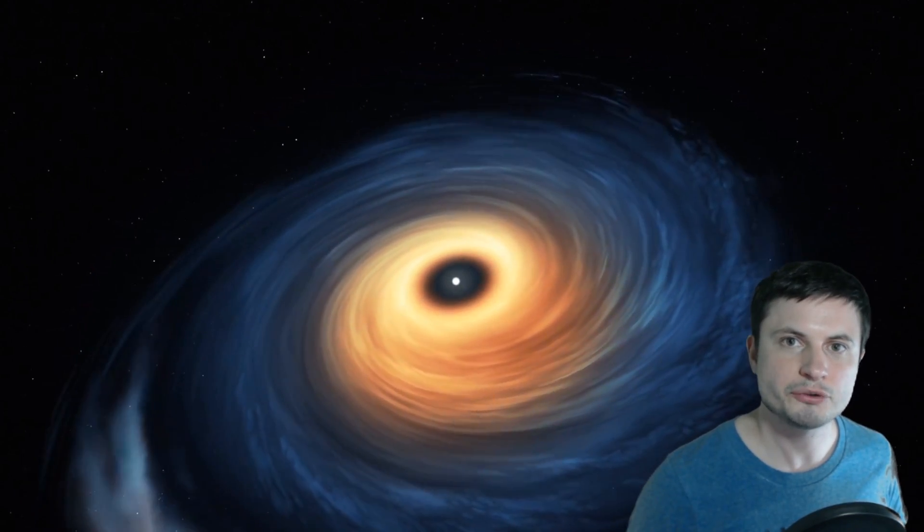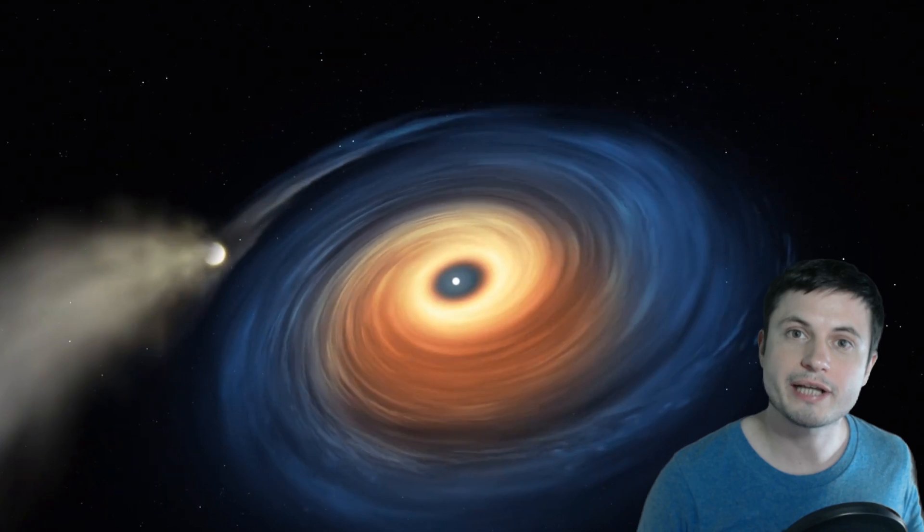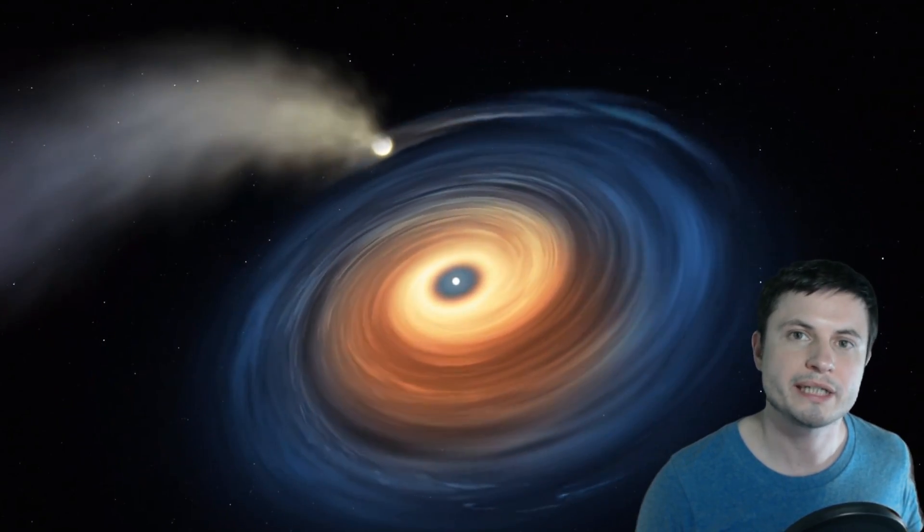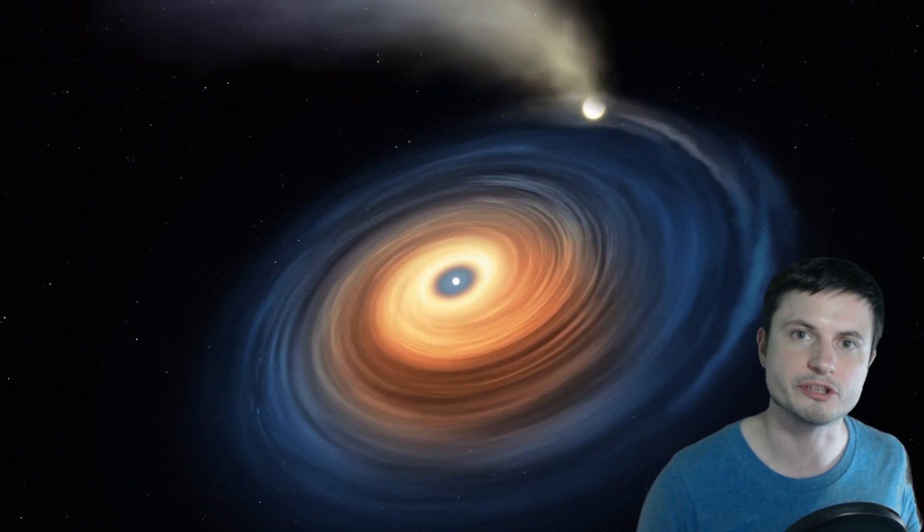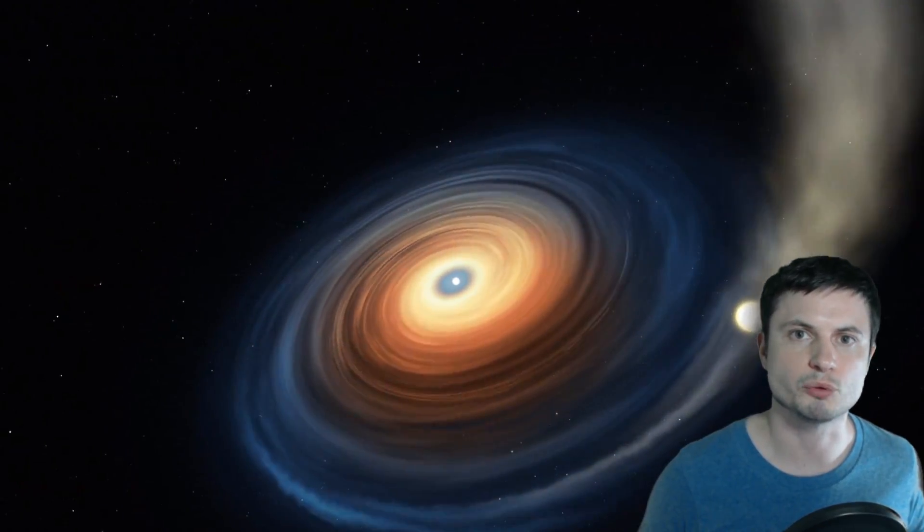Hello wonderful person, this is Anton and today we're talking about a very recent discovery of the first ever really large planet orbiting around a really small star, a typical white dwarf. Let's talk about this and welcome to What the Math.